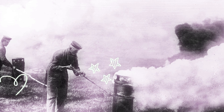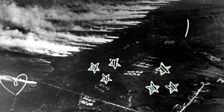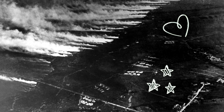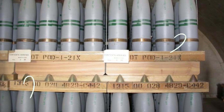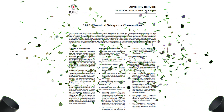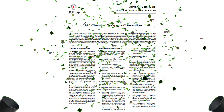Sulfur mustard is a type of chemical warfare agent. As a chemical weapon, mustard gas was first used in World War I and has been used in several armed conflicts since then, resulting in more than 100,000 casualties. Today, sulfur-based and nitrogen-based mustard agents are regulated as Schedule 1 under the 1993 Chemical Weapons Convention.